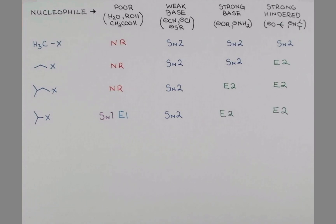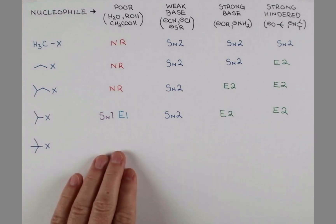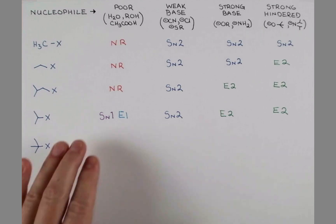On to our tertiary substrates. In order for an SN2 reaction to happen, we need to get backside attack of the nucleophile displacing the leaving group. Tertiary is much too hindered for that to be possible. And so, under our poor nucleophile conditions, we're going to wait around for this to ionize, and then the poor nucleophile can add in. And this describes an SN1 mechanism.